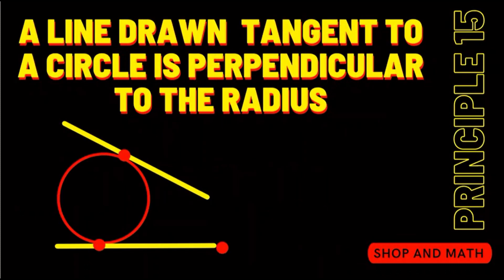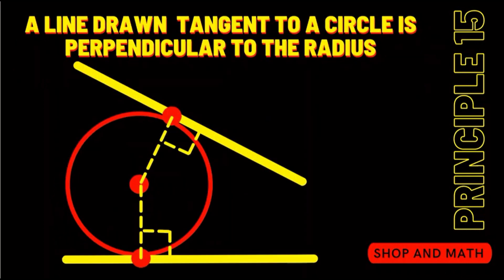A line drawn tangent to a circle is perpendicular to a radius, so in other words you can draw a line from the tangent point to the center of the circle and that line is going to be perpendicular.